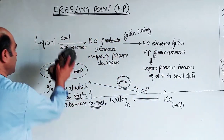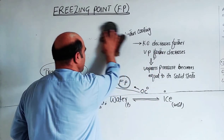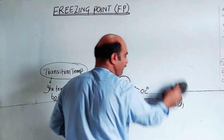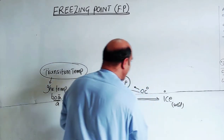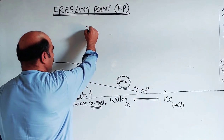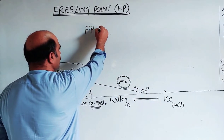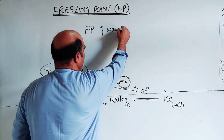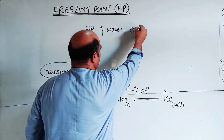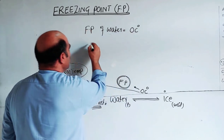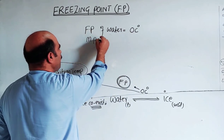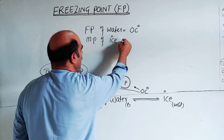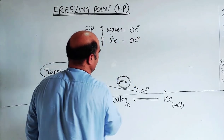The freezing point of water is equal to zero degrees C, and the melting point of ice is also zero degrees C. Both the freezing point of water and the melting point of ice are the same temperature.